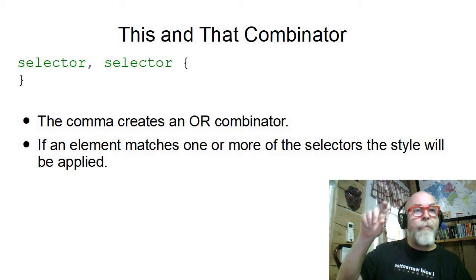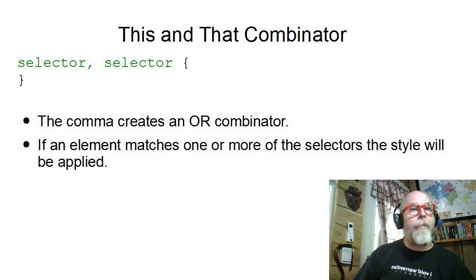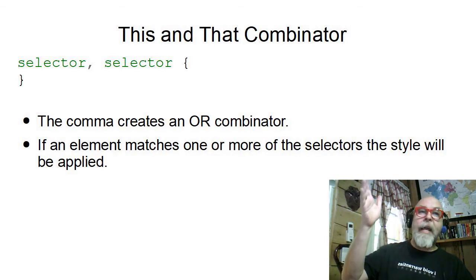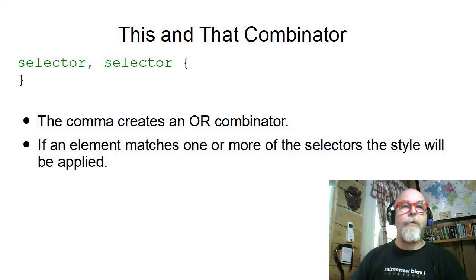If you have the same style that you want shared across multiple selectors, you just say selector, comma, selector. For instance, if you wanted the same style applied to all of the H1s and H2s, you could say H1, comma, H2, and the this and that Combinator would then apply that one style to multiple selectors.